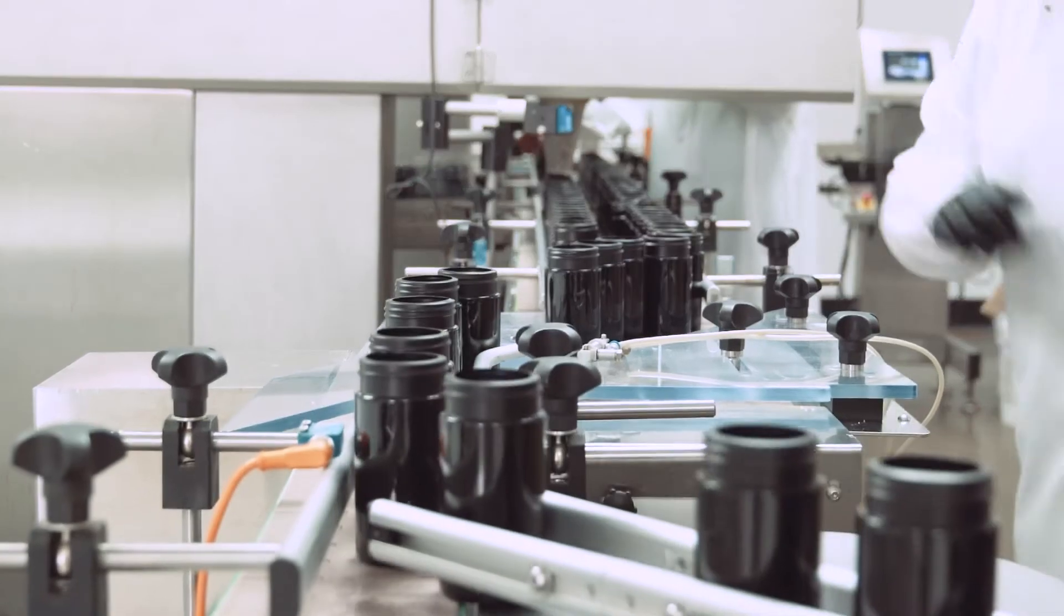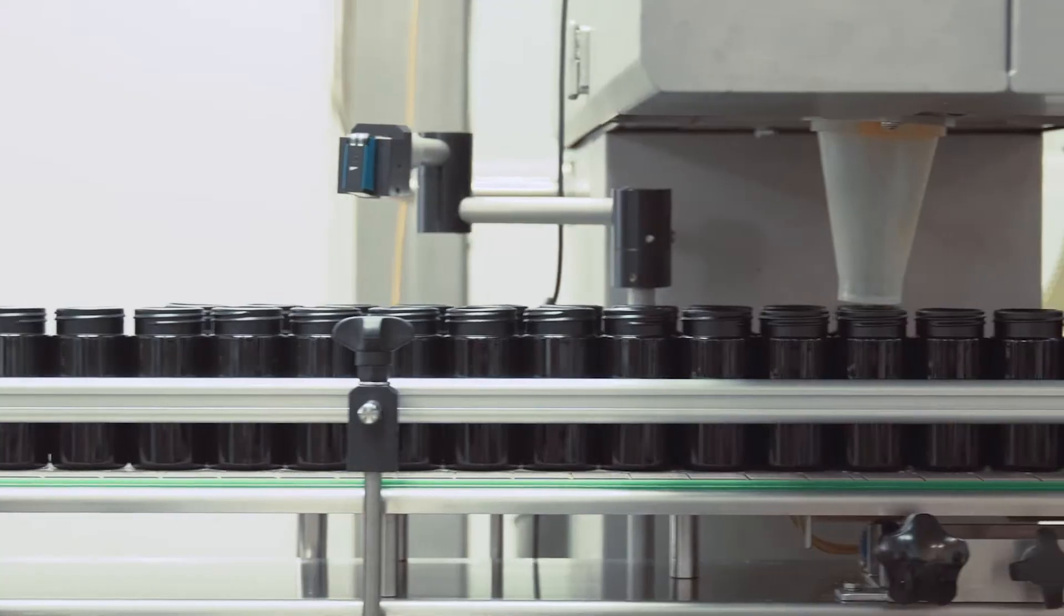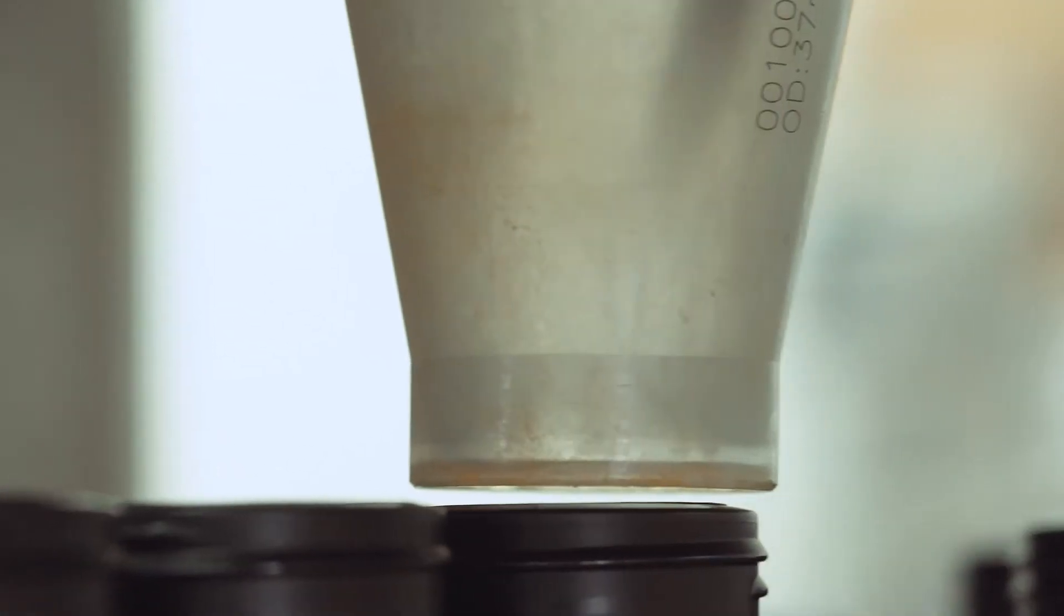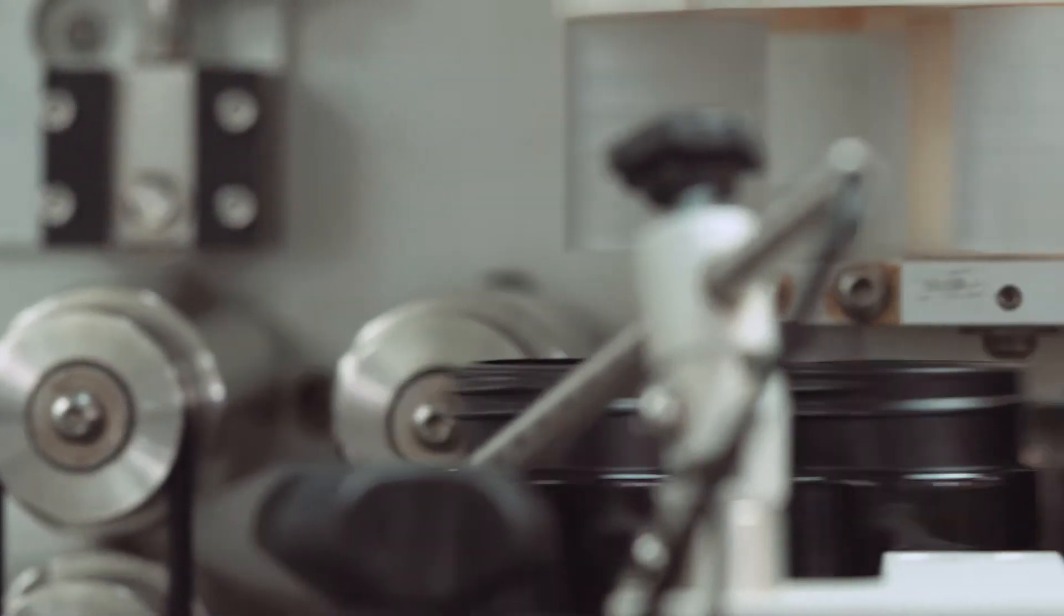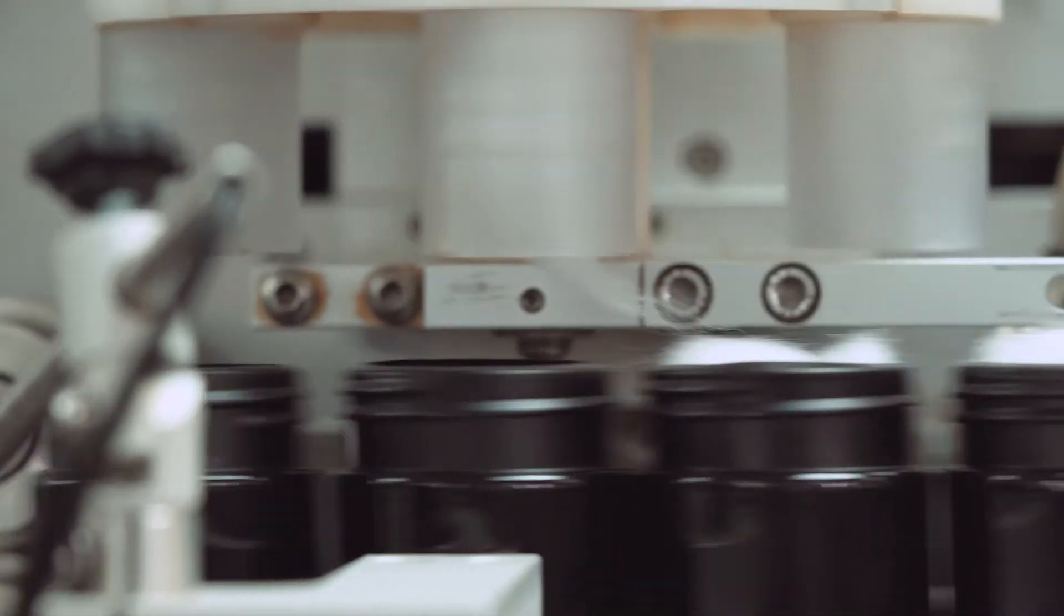The capsules are then filled into uniquely designed bottles. These bottles are UV treated to increase the moisture barrier and to preserve the quality and integrity of Stemregen's stem cell enhancer blend.